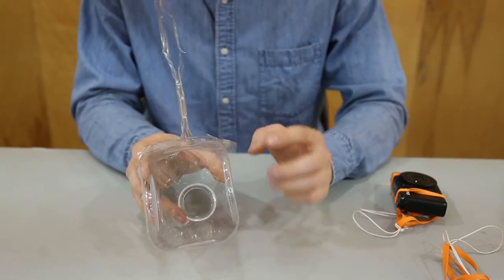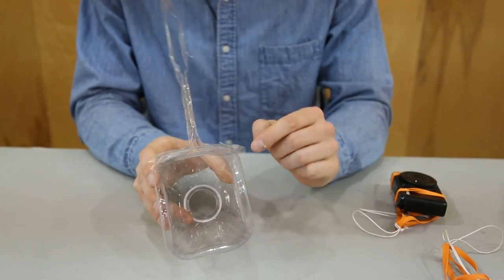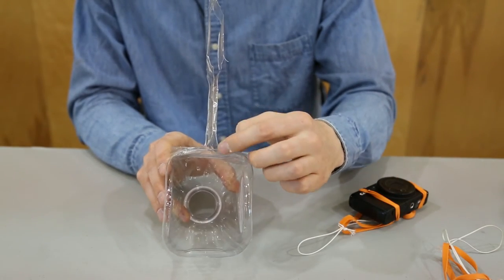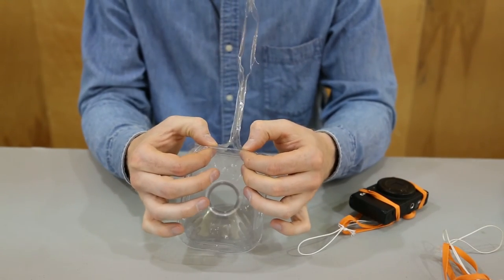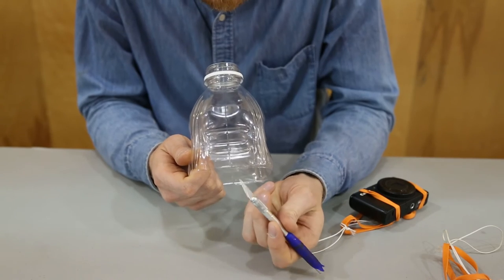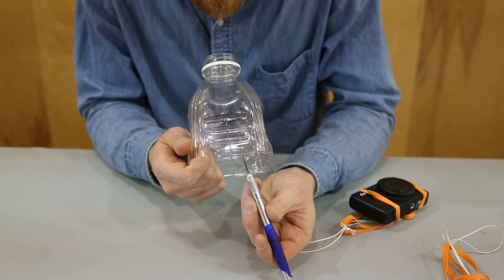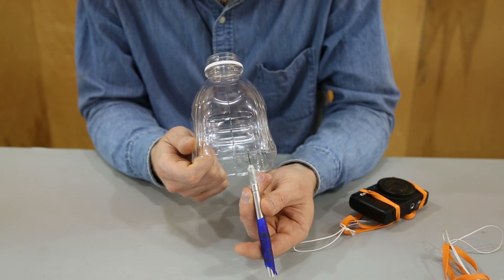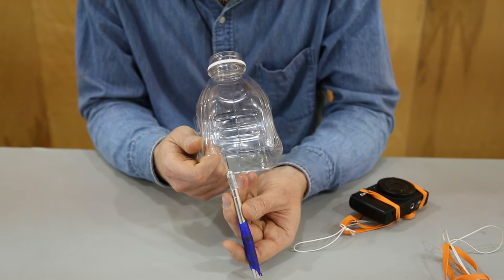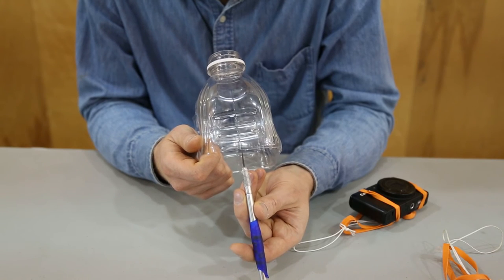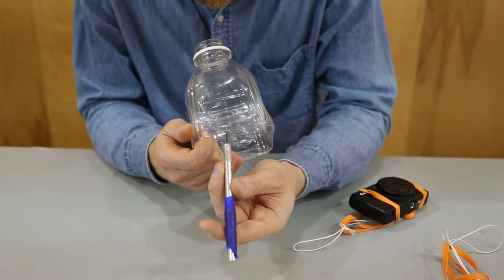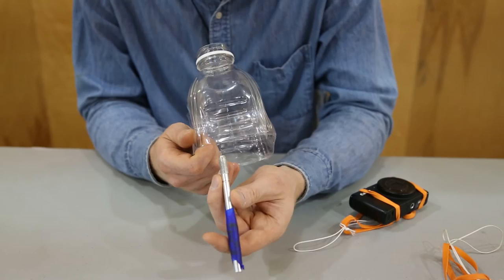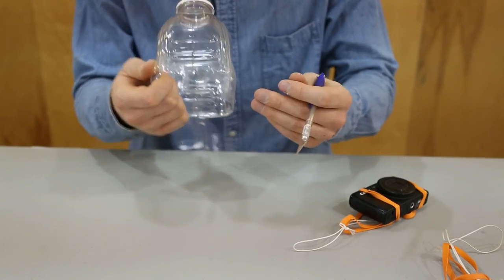To secure the camera to the rig so it doesn't fall out, we'll loop the attachment loops onto two tabs cut in the bottom of the bottle. The tab should be about an inch wide, so I'll measure about a half inch or a little over a centimeter out from both sides of the center seam of the bottle. And cut in about an inch or two and a half centimeters.